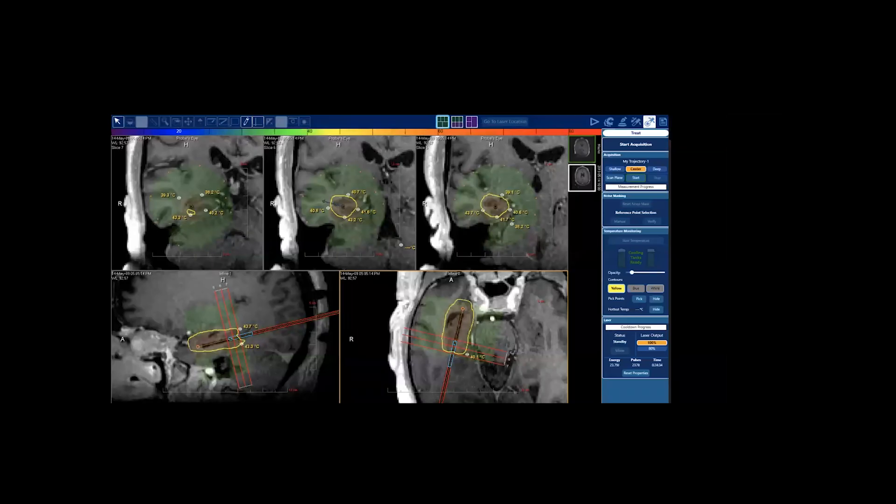An MTLE case which can show you the orientation of the fiber, the approach which is a posterior occipital approach coming down the long axis of the mesial structures. You can see in this case, what kind of thermal map is that, is that reversible or irreversible? It's yellow, it's reversible. Wow, beautiful. So you can see where the ablation is happening there.